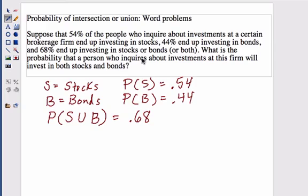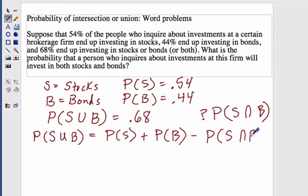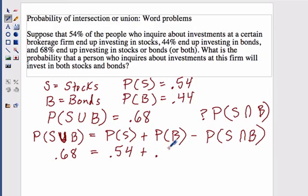The question asks: what is the probability that a person who inquires about investments will invest in both stocks and bonds? So we want to find the intersection. Remember, the formula says the union of the two events equals the probability of each single event added together, minus the intersection of the two events. We plug in what we know: .68 equals .54 plus .44 minus the intersection, which is what we're trying to find.